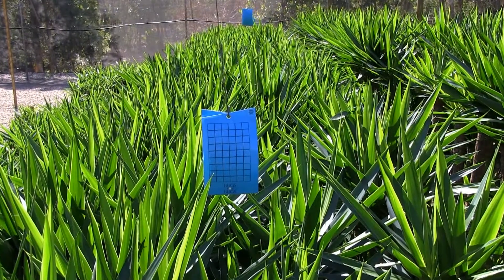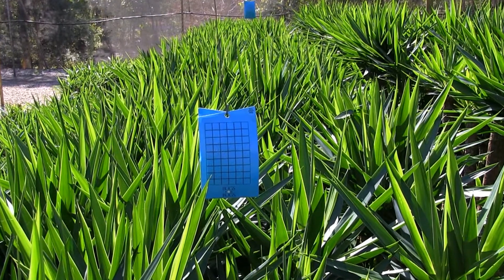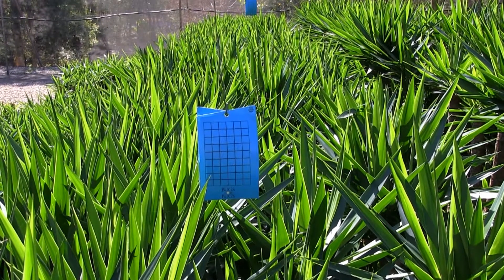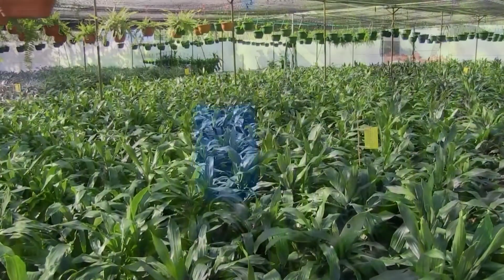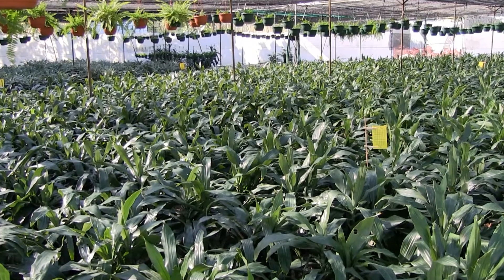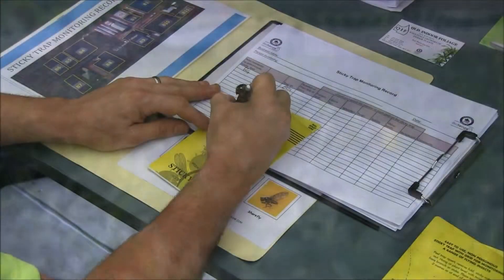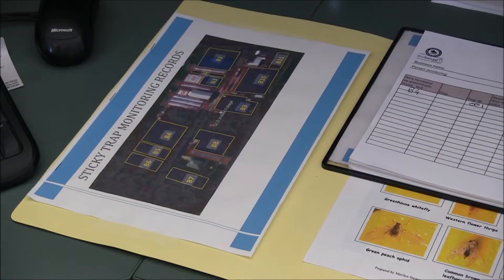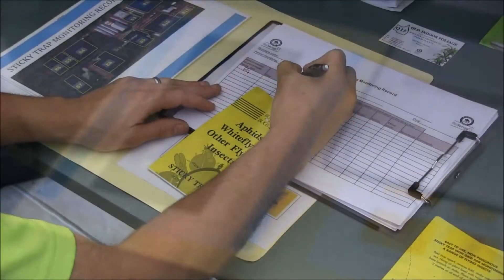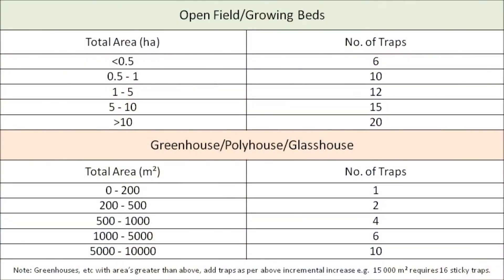Small open growing beds, greenhouses and polyhouses with areas of less than 500 square metres can be monitored as one unit. Large open beds, greenhouses and polyhouses should be divided into sections for ease of monitoring. Each sticky trap should be numbered and identified on a map or plan prior to being placed in the field or greenhouse. The following table details the minimum placement rate for sticky traps in different growing areas.